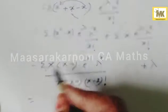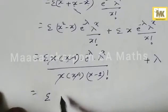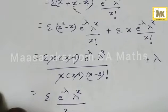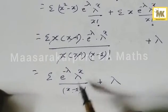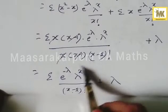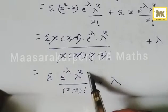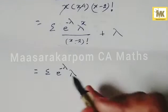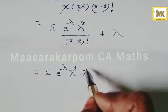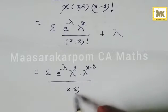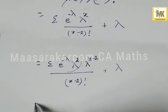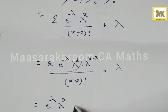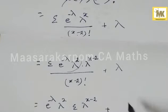After canceling x and (x-1), this equals sigma e^{-λ} · λ^x / (x-2)!, plus lambda. We then write λ^x as λ² · λ^{x-2}, factoring out λ². So this becomes lambda squared · e^{-λ} · λ^{x-2} / (x-2)!, plus lambda.